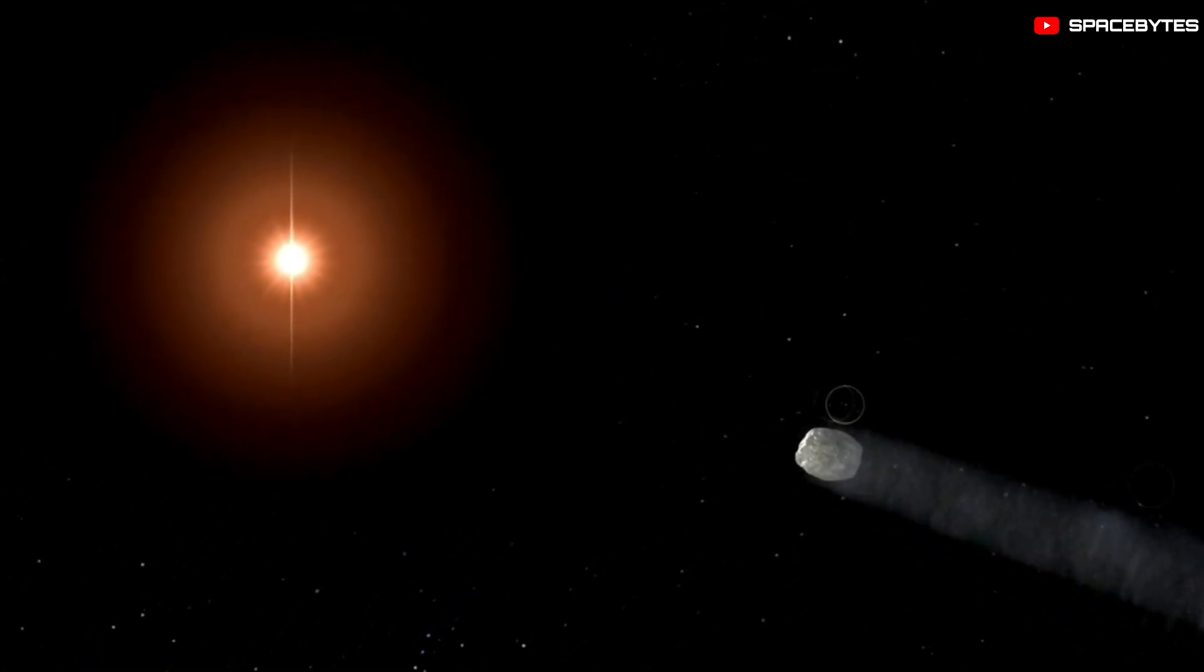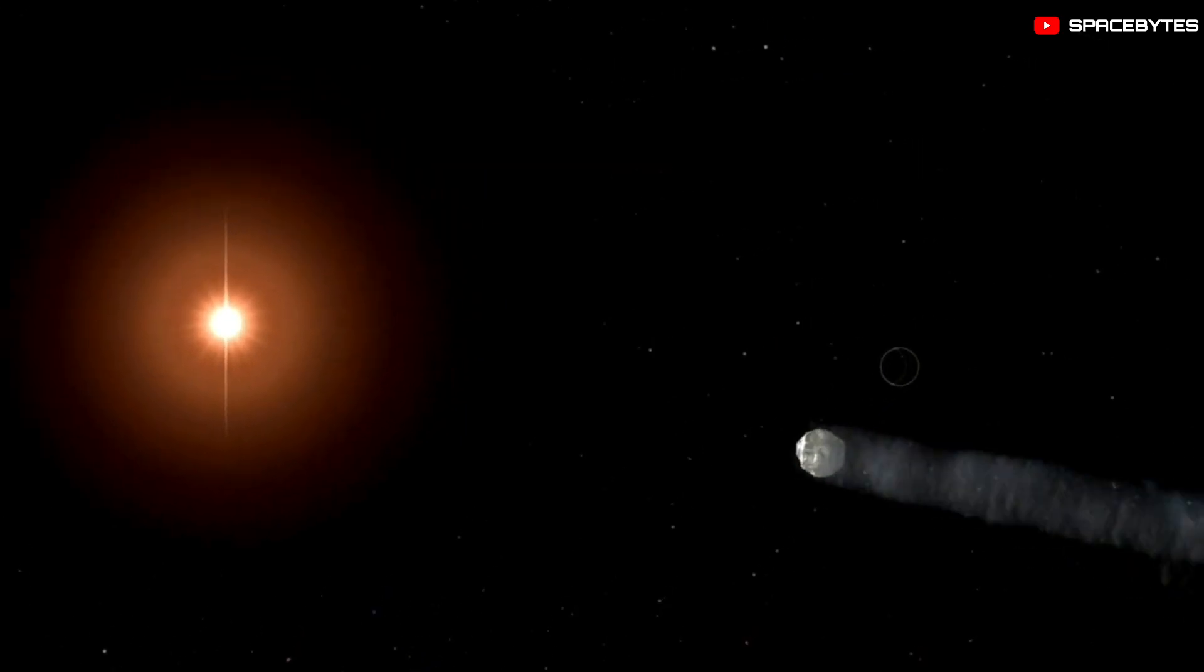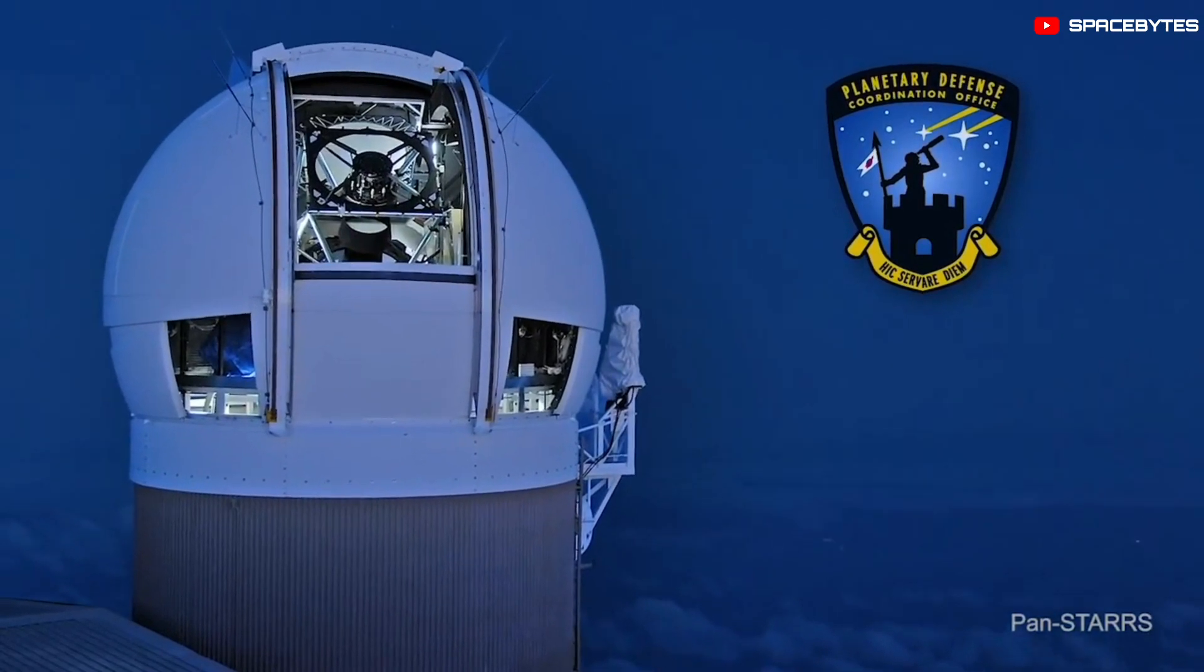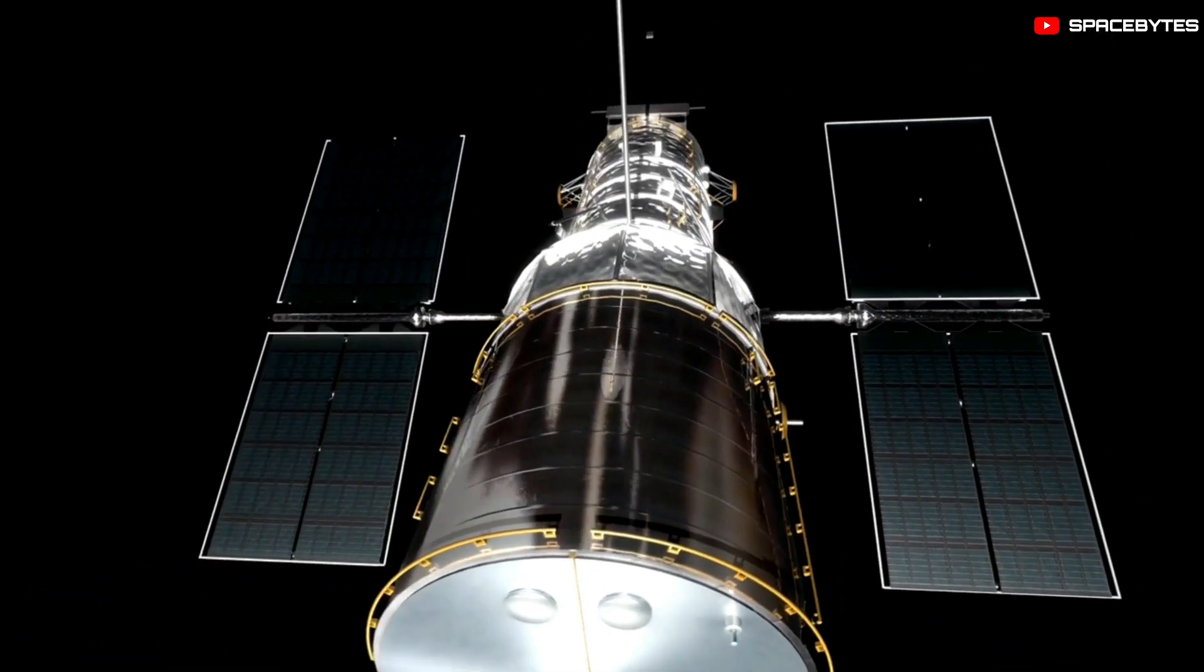The comet C-2017 K2 was first spotted in 2017 using the Pan-STARRS telescope in Hawaii, followed by a Hubble telescope observation that same year.